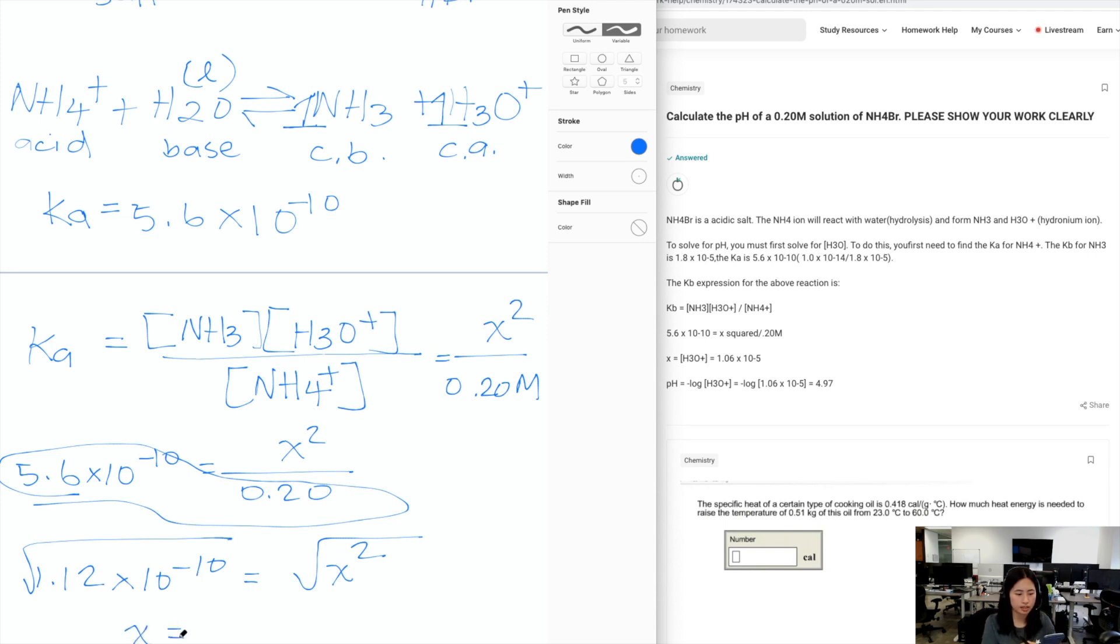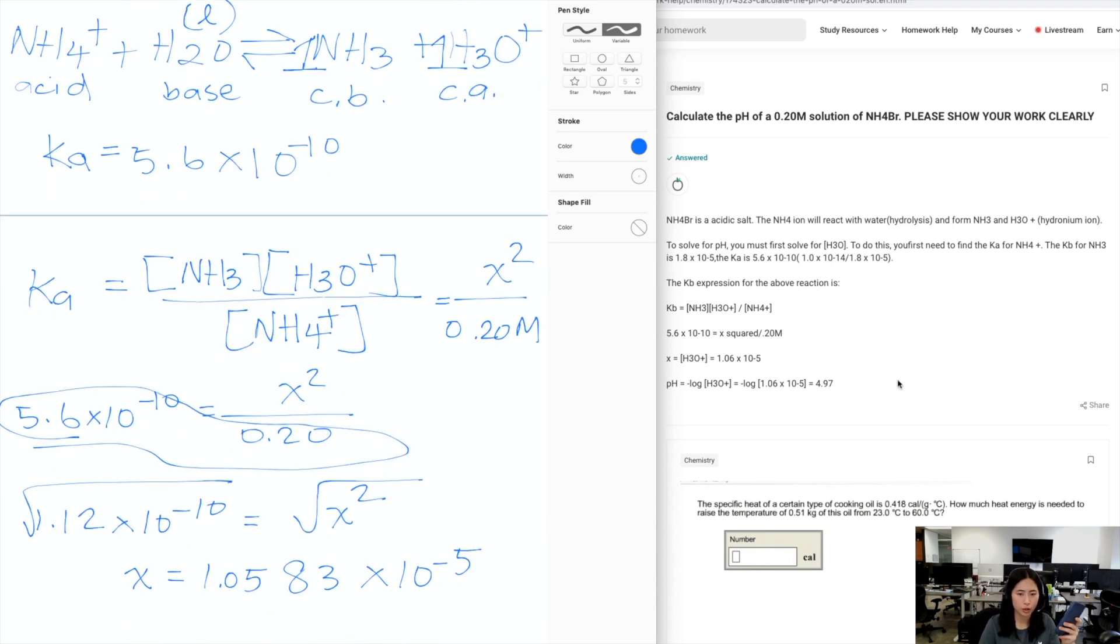So taking the square root of both sides, you would get 1.0583 times 10 to the negative 5. So in that case, you would have your X being equal to this. So what did we say what X was? So we said that X was NH3 and H3O+. So we know that the concentration of H3O+ is this thing, or this number.